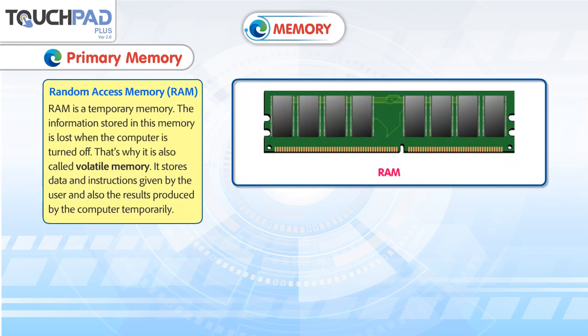RAM is a temporary memory. The information stored in this memory is lost when the computer is turned off. That's why it is also called volatile memory. It stores data and instructions given by the user and also the results produced by the computer temporarily.